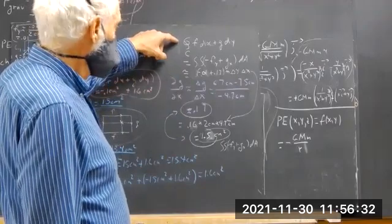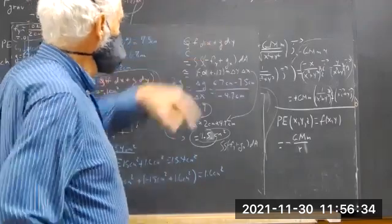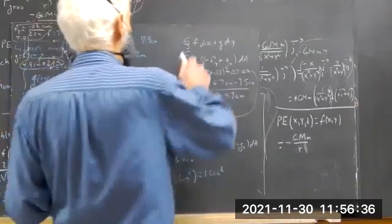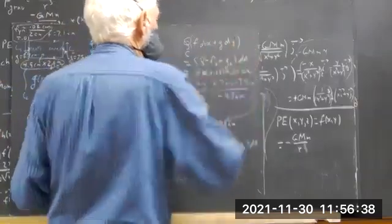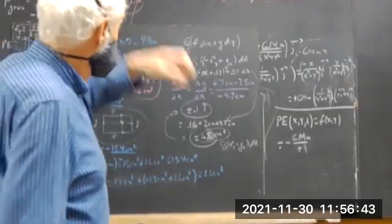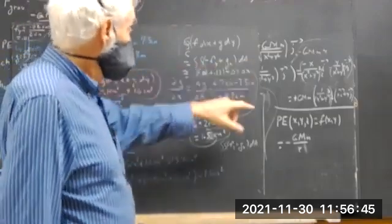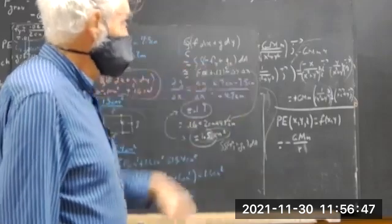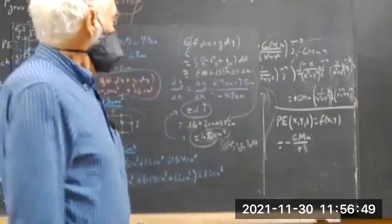Green's theorem says that the integral of Fdx plus Gdy, and I always tend to be pretty strict about parentheses even though we know what this means, should equal the double integral over the area of negative Fy plus Gx.